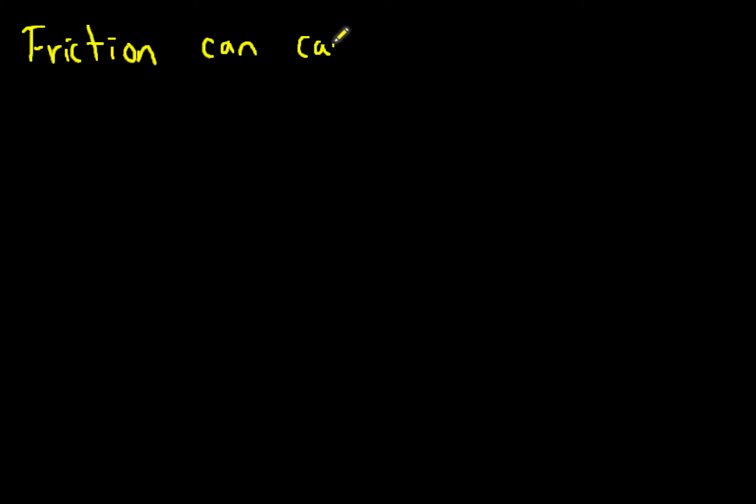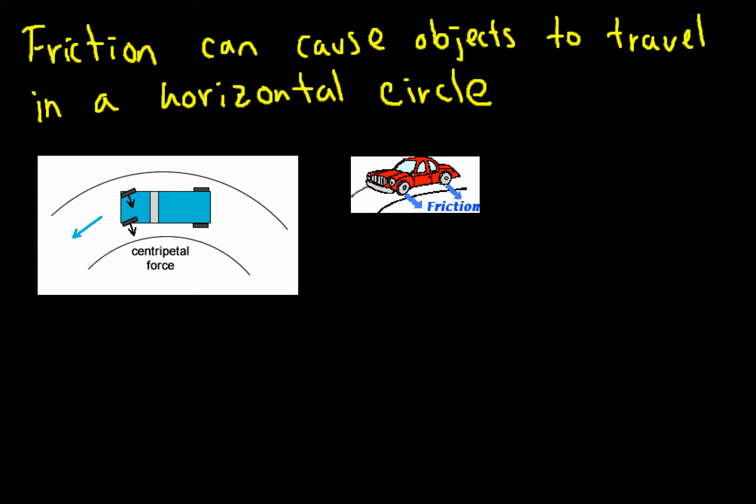Friction causes objects to travel in a horizontal circle. In the case of a car traveling on a road, friction pushes on the wheels of the car as the wheels rotate and causes a force that allows the car to travel in a horizontal circle.